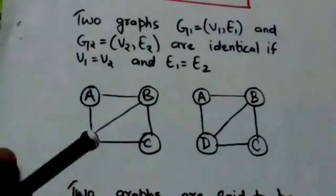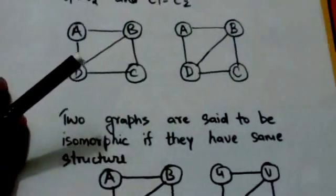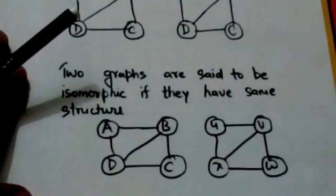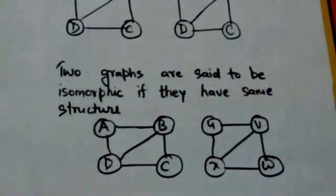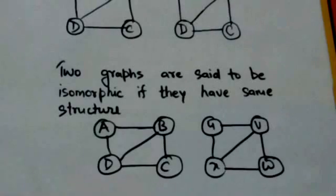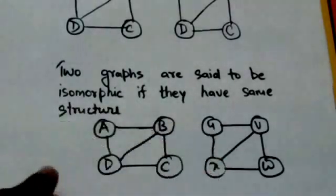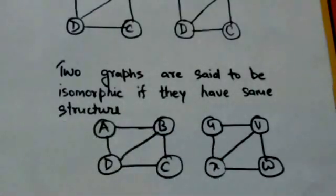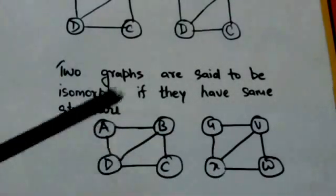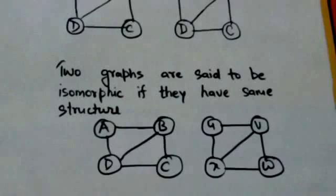Two graphs are said to be isomorphic if they have same structure. These two graphs are isomorphic because they have same structure.